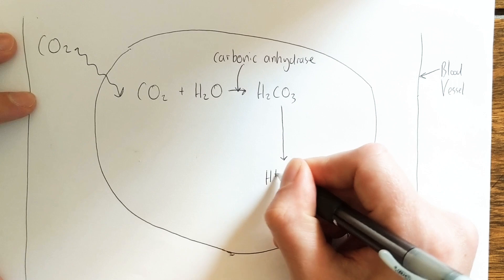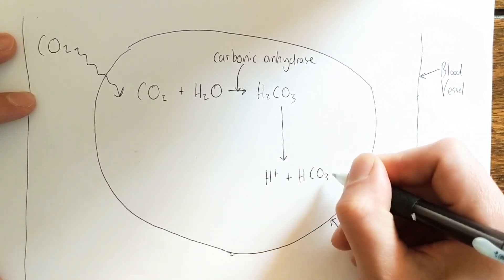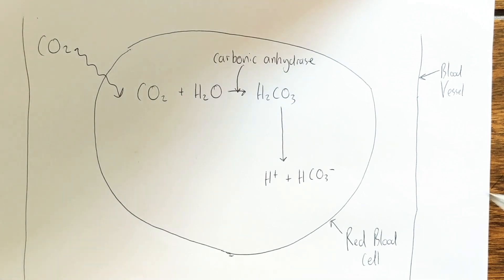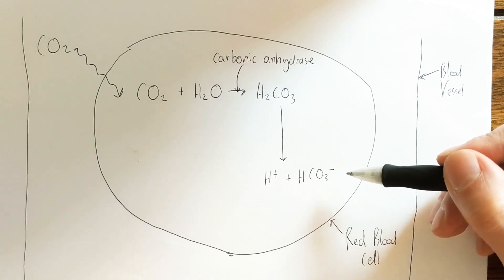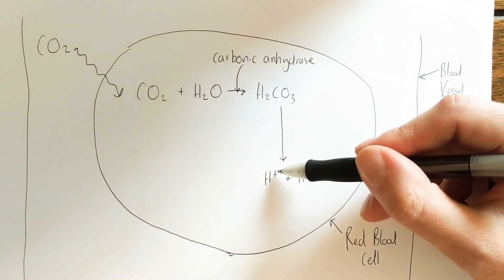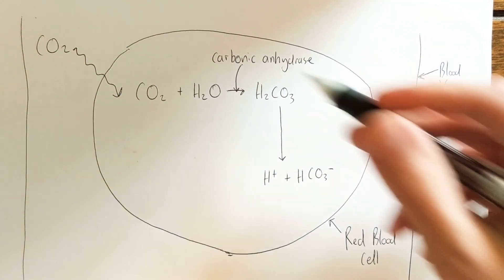So what will form is H+ plus HCO3-. Now this molecule HCO3- is a hydrogen carbonate ion, which again you need to be aware of. And we also have H+ ion in the cytoplasm now of the red blood cell.